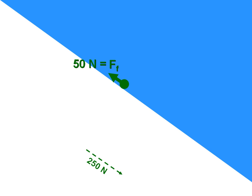And what we're left with is this 250 newtons that was going down the ramp due to gravity. So let's slide that back up here, so it's on the same plane. And we see that we have 250 newtons downward and 50 newtons upward.